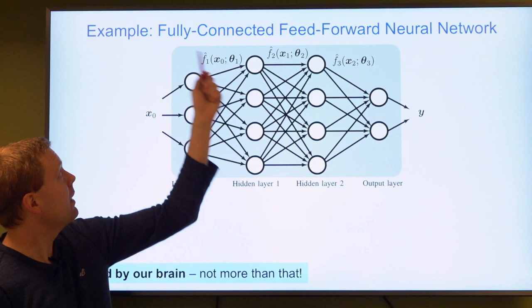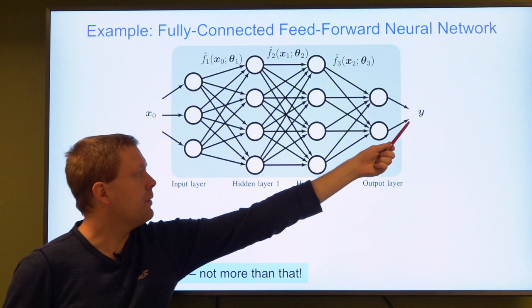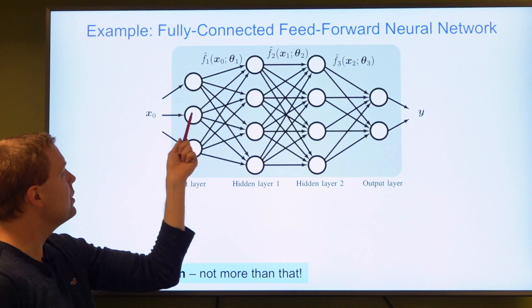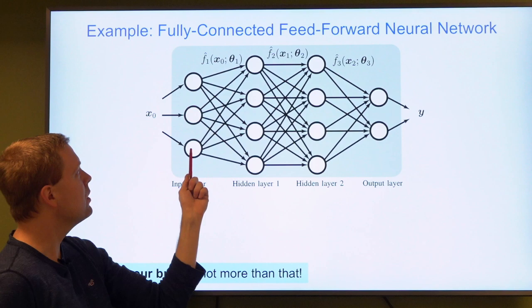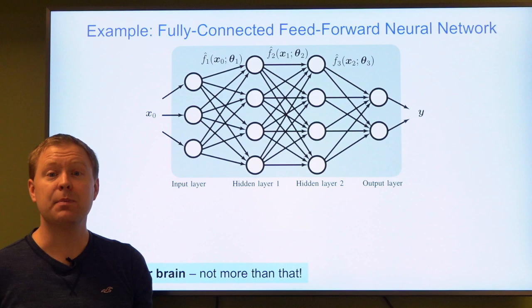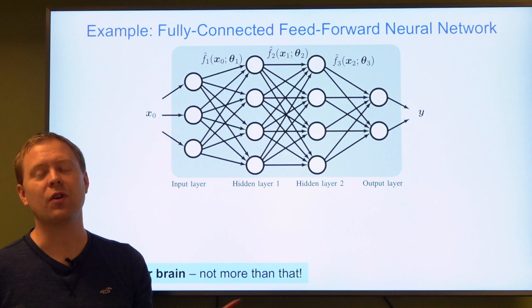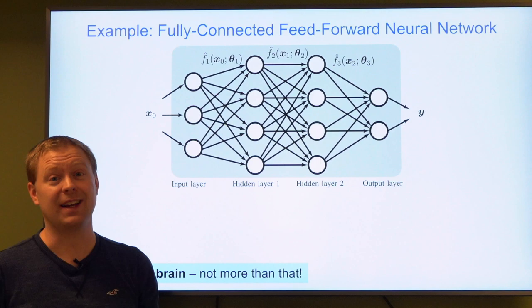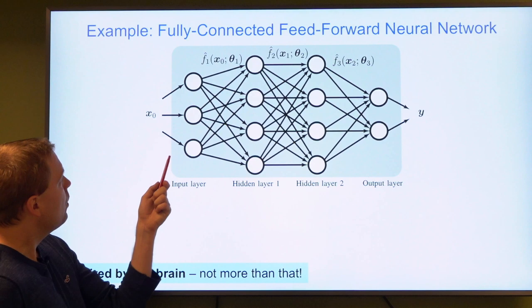In neural networks, here is the classical example: a fully connected feedforward neural network where the input gives us the output through a number of layers containing what we call neurons. These are fully connected, meaning information in one neuron goes to the next neuron. This is inspired by the human brain, but it is usually overstated how strongly this connects to how neurons in the human brain actually work. It is just an analogy.